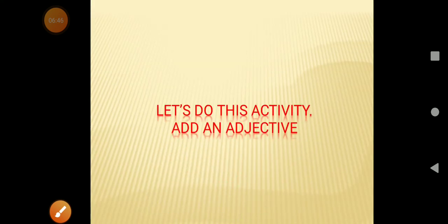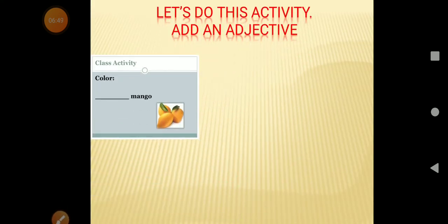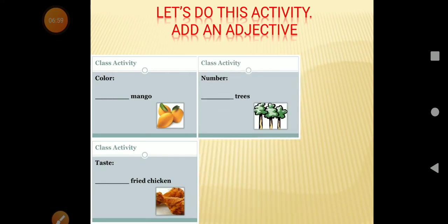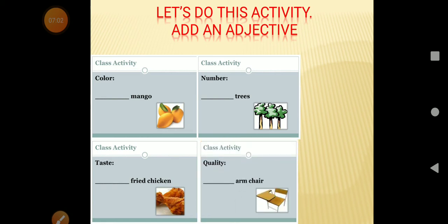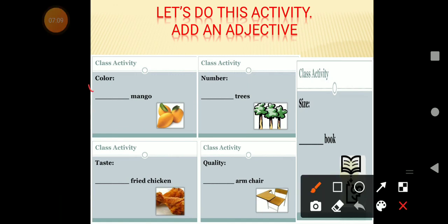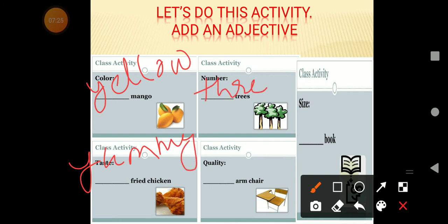Now do this activity. In this, you have to add an adjective of color. Very good, yellow. Now adjective of taste. Yummy. Adjective of number. Very good, three. Quality, flat. And the size, small. That is very good. So here you will write yellow, yummy, three, flat, and small. These are the adjectives.